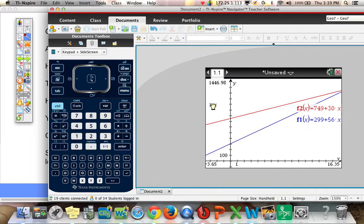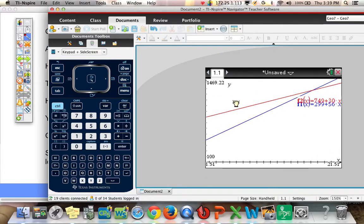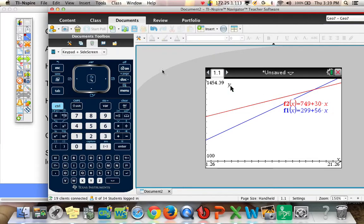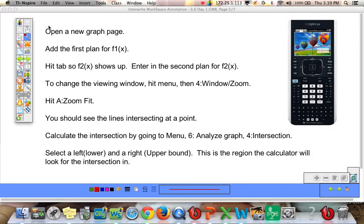So I'm trying to find where they cross. It'll be right there. Okay, so there's the graph. You should see that the lines intersect at a point. Let's calculate that intersection by going to menu. 6 and then 4.